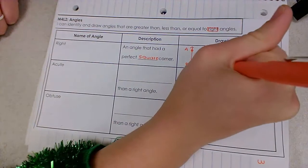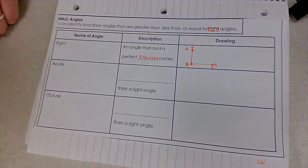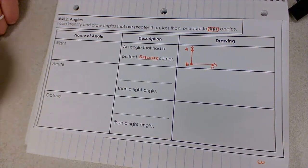A, B, C. Right angles have that perfect square corner so we even have a very specific symbol that we use to mark that angle space.